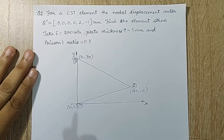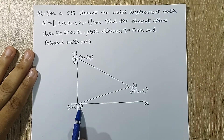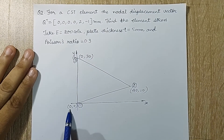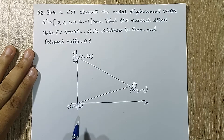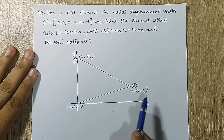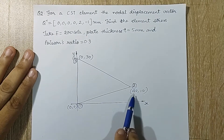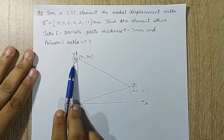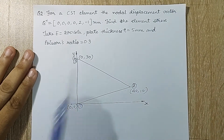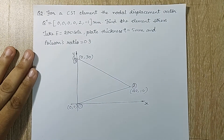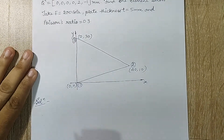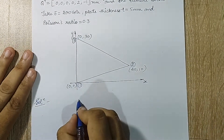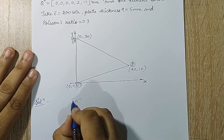This is the element which is given to me. The first node has coordinate 0, 0; the second node has coordinate 40, 10; and the third node has coordinate 0, 30.